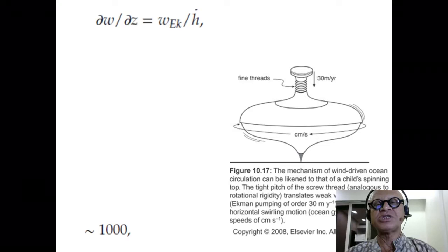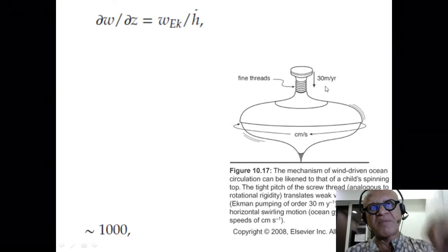The book asks you to imagine two things. One is this top where you have very tightly wound thread and then you chuck it so the thread is unwound at some speed which is much slower, like 30 meters per year in the case of Ekman pumping, but the top is going to spin much much faster, of the order of centimeters per second, as in the meridional velocity and the vertical velocity.